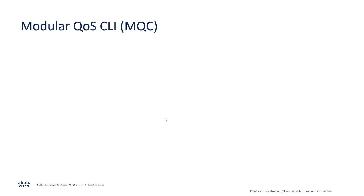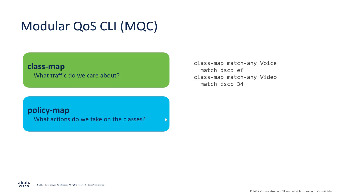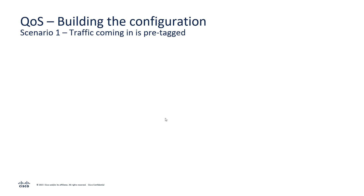Before building the configuration, let's look at the CLI structure used. Any device running IOS XE uses a configuration model called MQC — Modular QoS CLI. This is a three-step process: first, we define a class map to identify the traffic we care about; second, we define a policy map to specify the actions taken on those classes; and finally, we define a service policy to apply the policy map on a particular interface in either the ingress or egress direction.